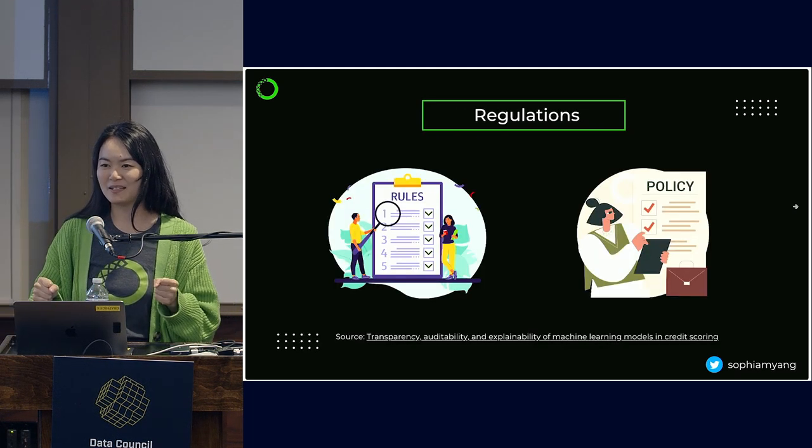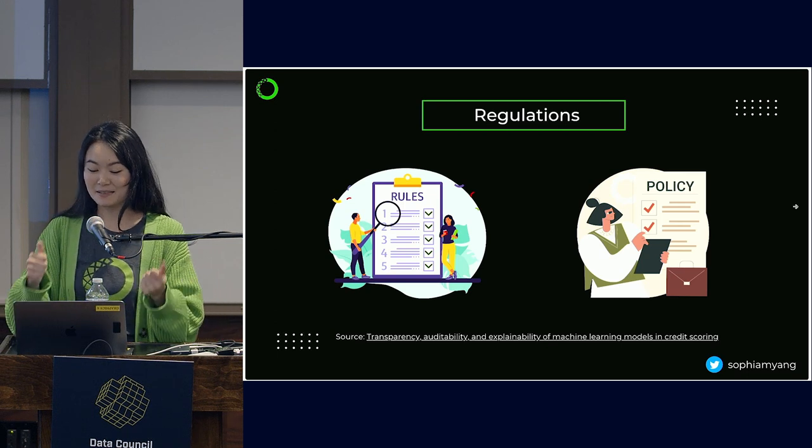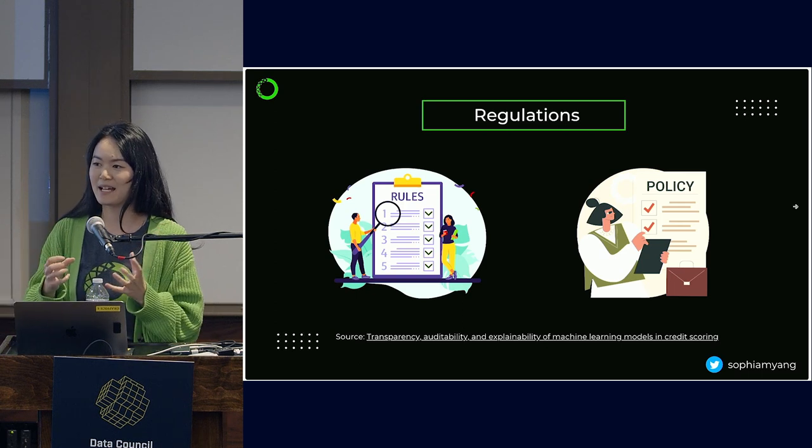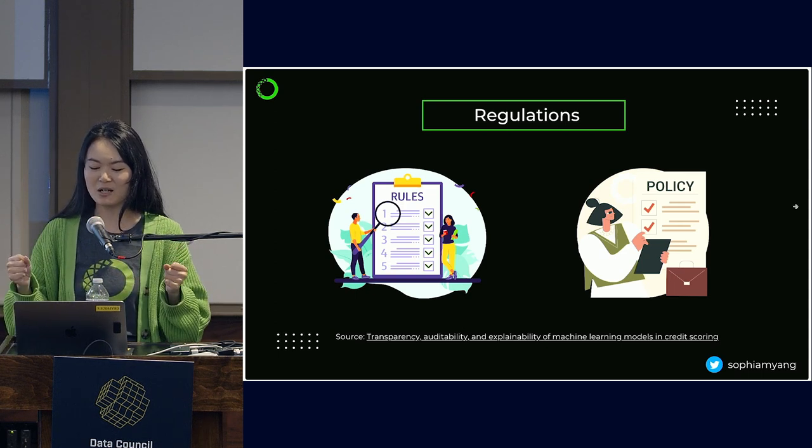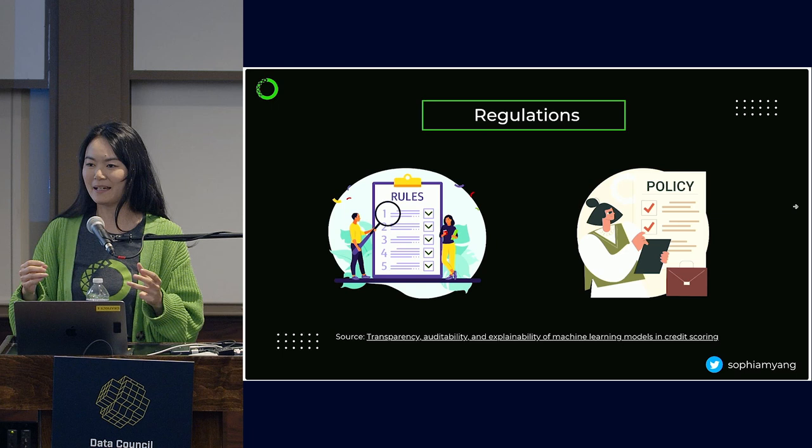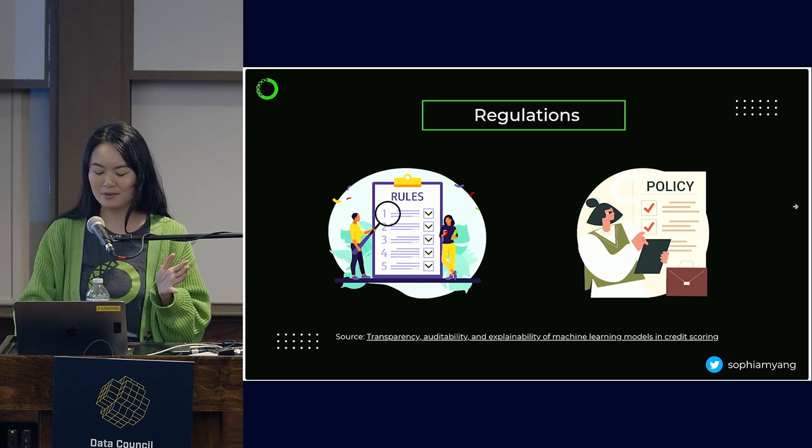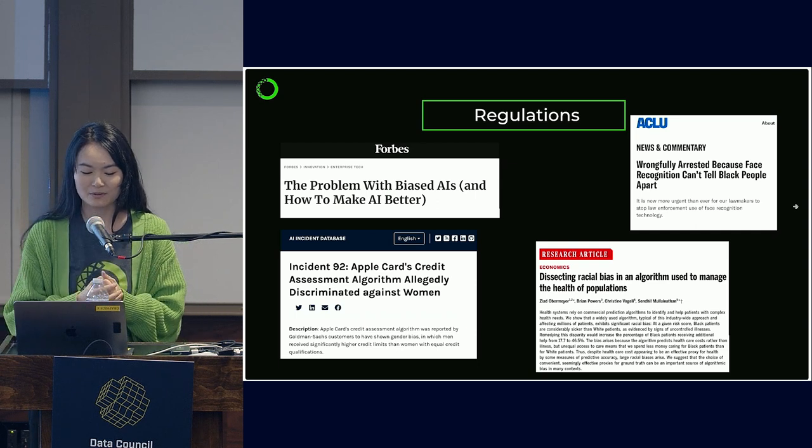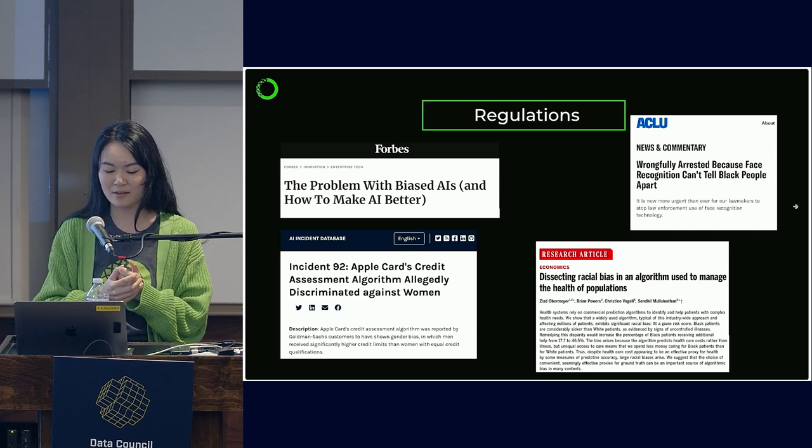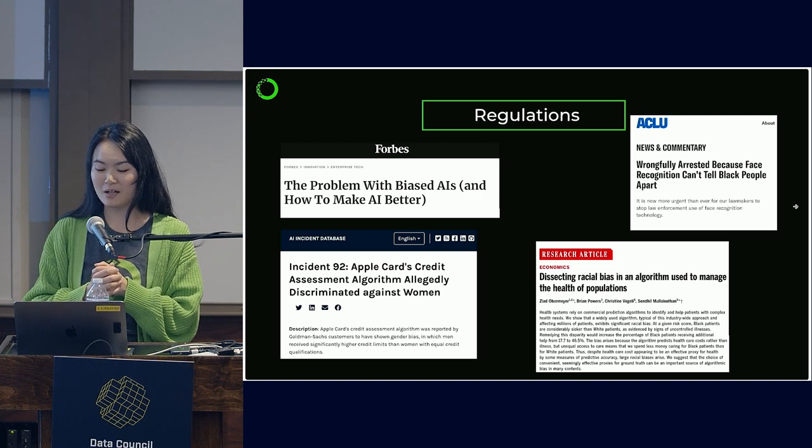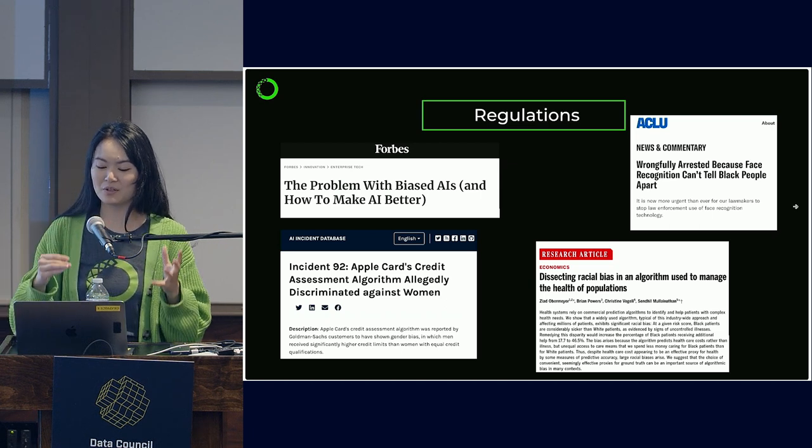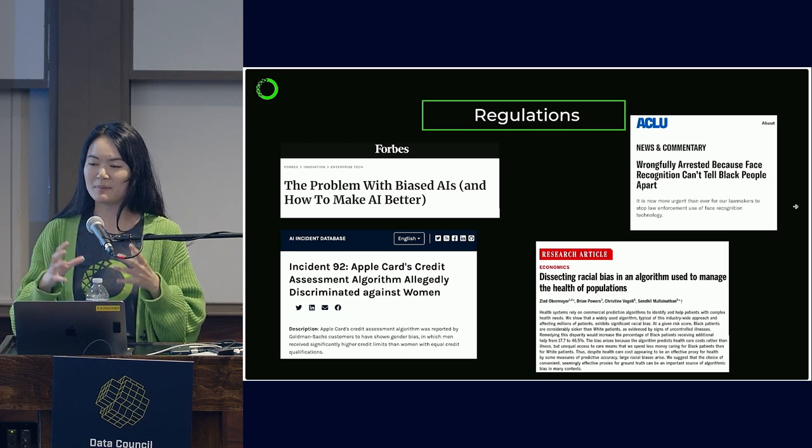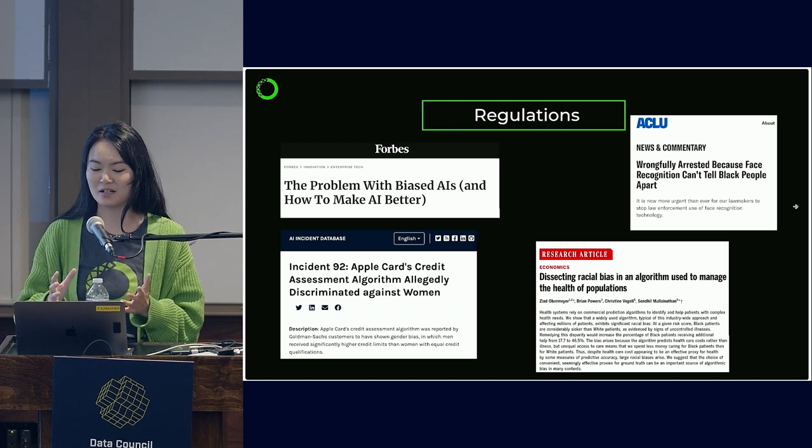I hope from those two concrete examples, you can see that being able to explain your model actually really helps with your internal stakeholders and your customers. And you can use the methods right now to help your sales team, your marketing, or your customers. The next important part is regulations and compliances. A lot of times, even when the models don't have race and gender in their model, the model is still biased because of some other variables. And we see a lot of news out there. For example, Apple Card's credit assessment algorithm discriminated against women. I think being able to explain the model and understand how model performs will be able to catch certain biases early on before launching.